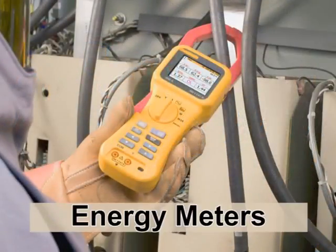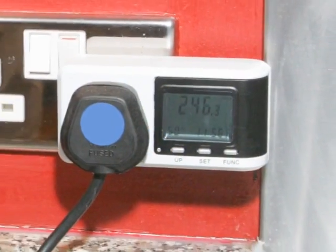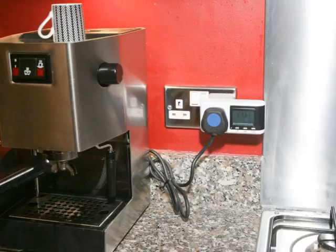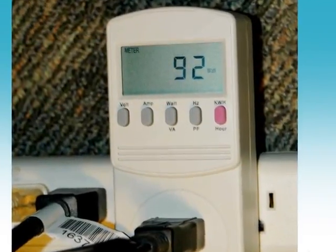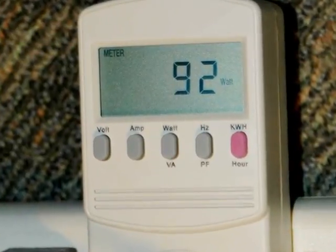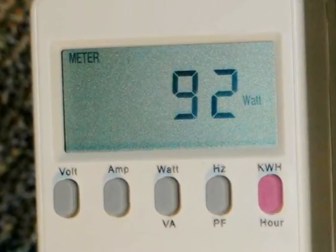Energy meters: An electric meter or energy meter is a device that measures the amount of electrical energy consumed by a residence, business, or an electrically powered device. Electric meters are typically calibrated in billing units, the most common one being the kilowatt-hour. Periodic readings of electric meters establish billing cycles and energy used during a cycle.